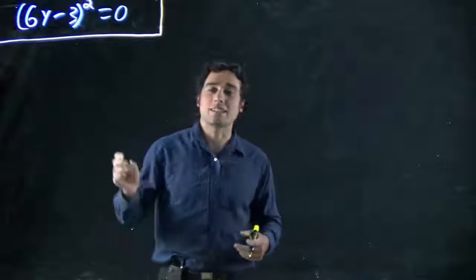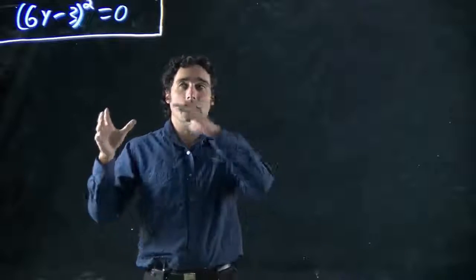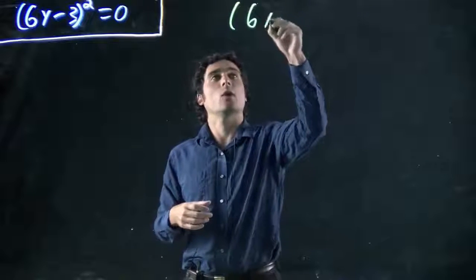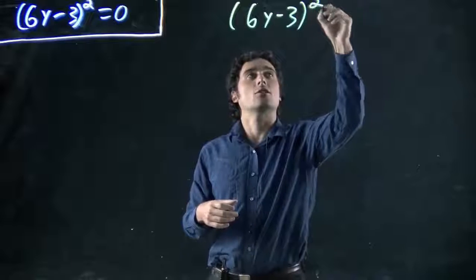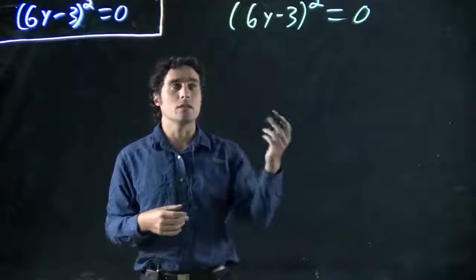So what do we got? We got 6y minus 3, all of that squared. So all of that in brackets squared. In fact, let's write it out. 6y minus 3, all squared, equal to zero. And we're going to expand this out. Well, how are we going to do that?